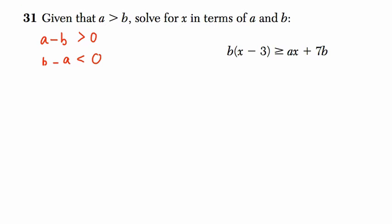All right, so the first thing I'm going to do is distribute this b. We have b times x minus 3b, essentially, right? Or b times 3. Usually I put the number first, so it's 3b. It's greater than or equal to ax plus 7b.